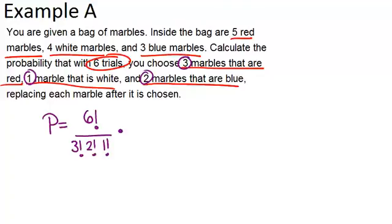Then we're going to multiply by the probabilities of each of these things. So what's the probability of getting three marbles that are red? Well, how many marbles are in this bag? There are five red, four white, and three blue. So that means altogether there are twelve marbles.